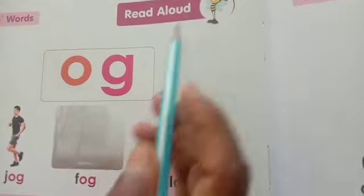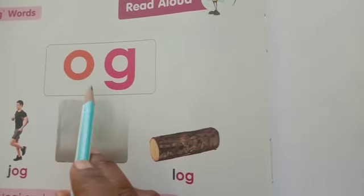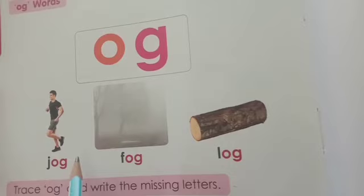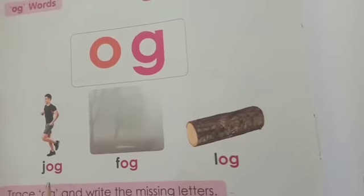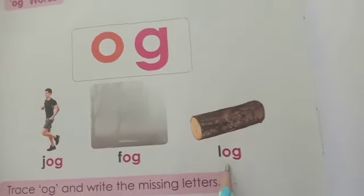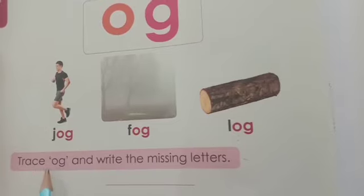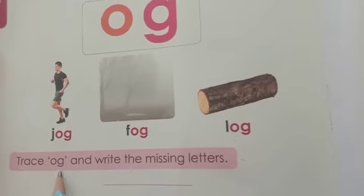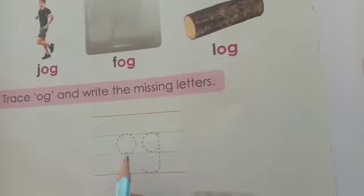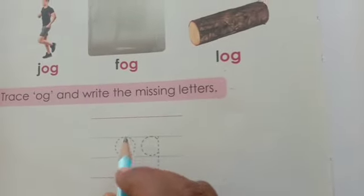Read aloud — OG, OC. Now Miss is going to teach you. Also repeat after me, children. Jog, Fog, Log. Trace OC and write the missing letters. Shall we trace now, children?